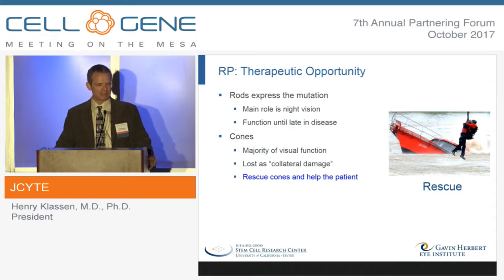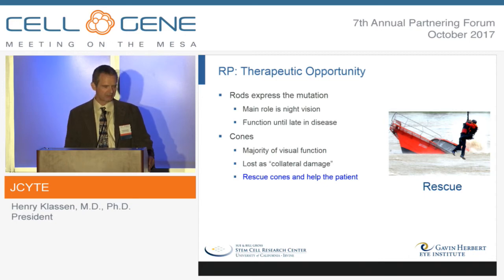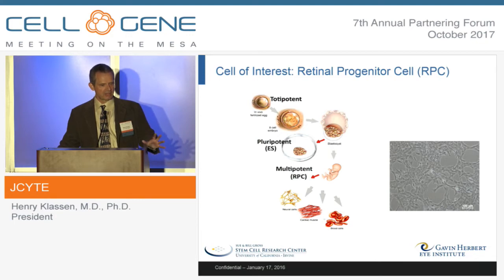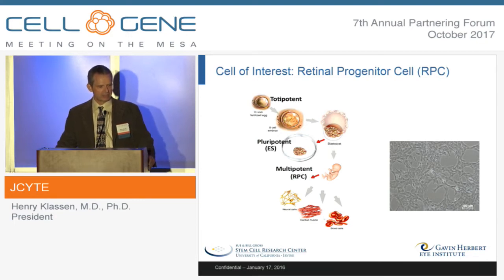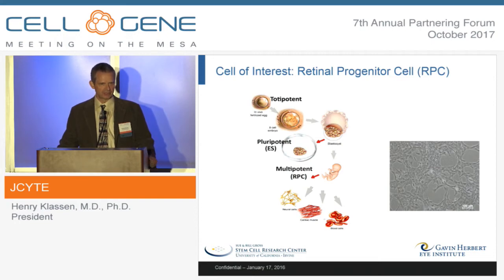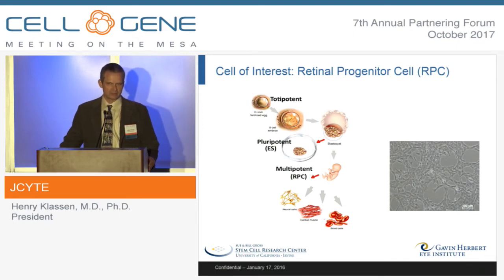Even if we just rescue the cones in RP, it would be very helpful to the patient. So our cell of interest is the retinal progenitor cell. Here I want to point out the difference between pluripotent ES cells derived from the pre-implantation blastocyst and multipotent retinal progenitors. Like other multipotent progenitor cell types, they're derived from developing tissue during histogenesis — in this case, retinogenesis — and on the right you can see what RPCs look like in culture.